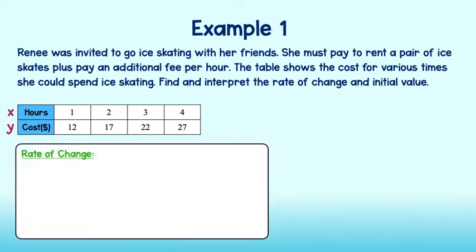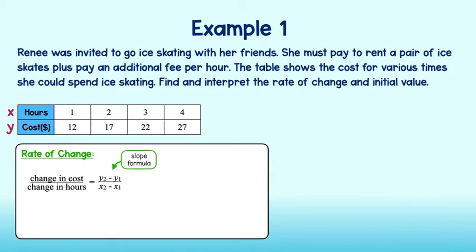To find the rate of change, we find out how the cost changes with each hour that passes by. To do so, we find the ratio of the change in cost to the change in hours, or y2 minus y1 over x2 minus x1. You may recognize this as our formula for slope. Now, choose any two points from the table. I'll use 1, 12 and 3, 22.